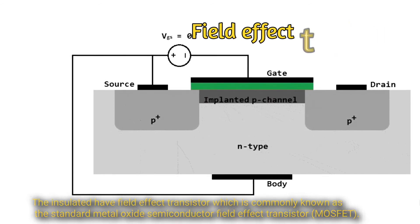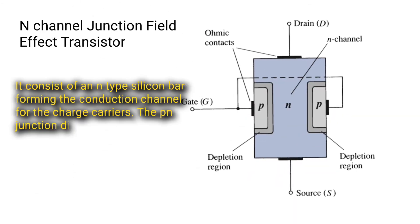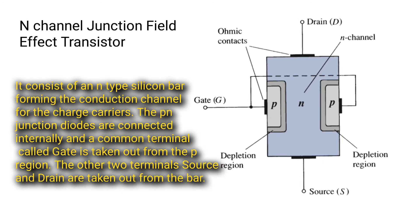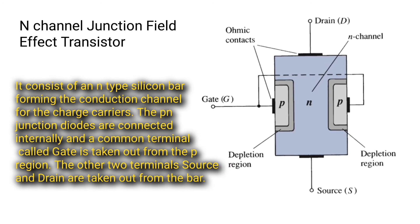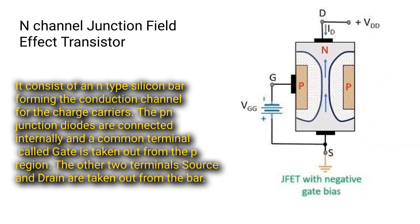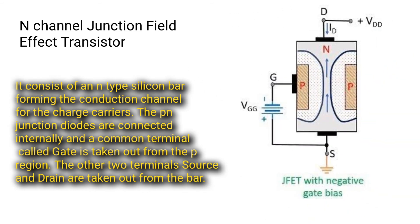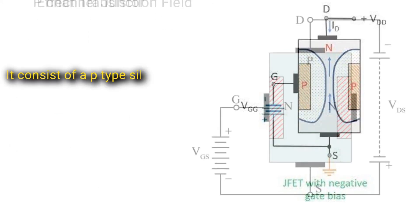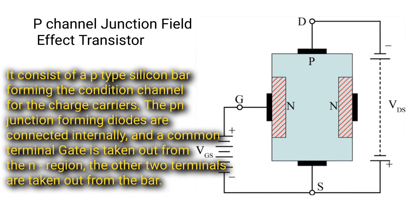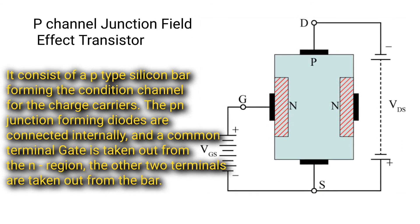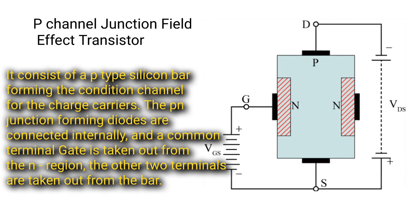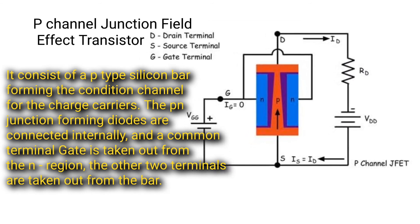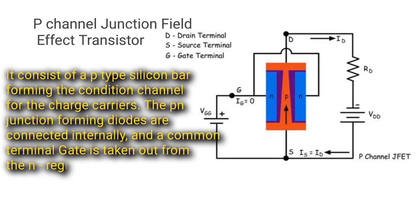N-channel JFET: it consists of an N-type silicon bar forming the conductor channel for charge carriers. The PN junction forming diodes are connected internally, and a common terminal called the gate is taken out from the P region. The other two terminals, source and drain, are taken out from the bar. P-channel JFET: it consists of a P-type silicon bar forming the conduction channel, with the gate taken out from the N region and the other two terminals from the bar.